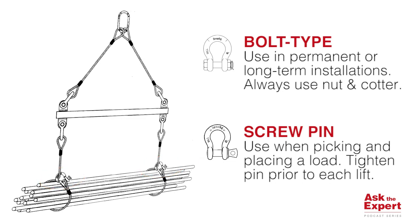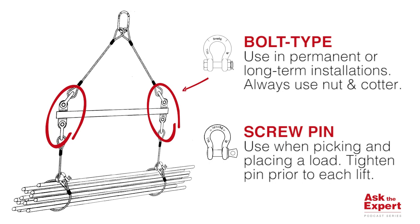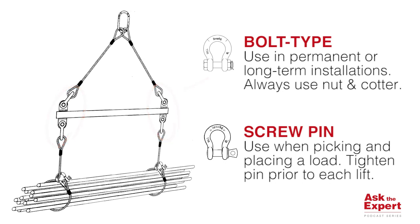As you can also see, above the load right here, there are four shackles connected to the spreader beam. Because these shackles up here are used in a permanent connection, these shackles must be of the bolt, nut, and cotter type. Really important.